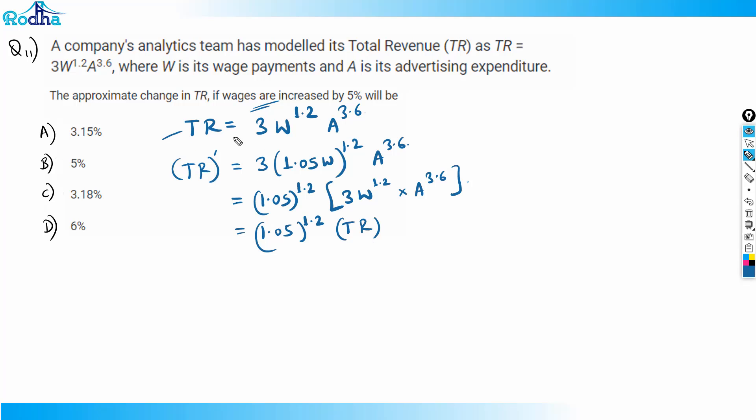So now if you see, TR dash has become 1.05 to the power 1.2 times TR. You just need to have this common sense. Don't calculate this, just know one thing.